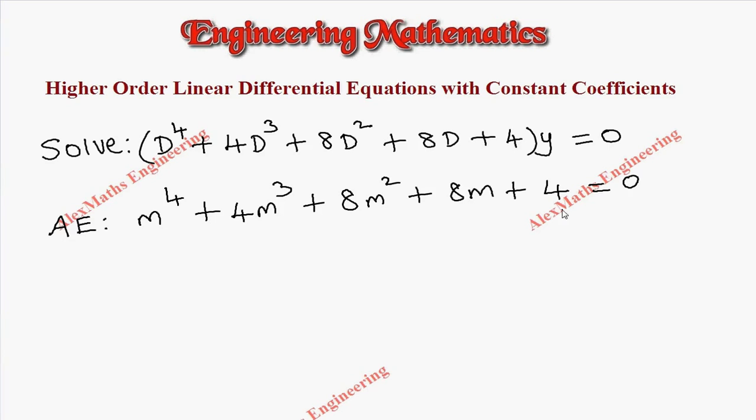On solving this using calculator, we get the values of all m. So m is nothing but -1+i, -1+i, -1-i, and again -1-i.